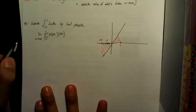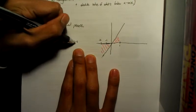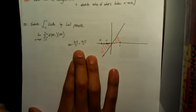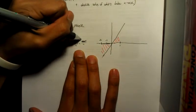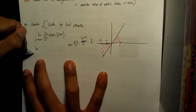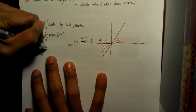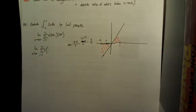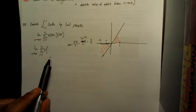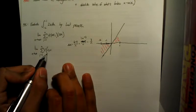So the limit as n approaches infinity of sum from i equals 1 to n of f of delta xi times delta x. And now what we would solve for next is our change of x, because we're going to need that for both parts. So if you can recall from the last video, change of x just equals b minus a over n, which is 1 minus negative 2 over n. So that becomes 3 over n.